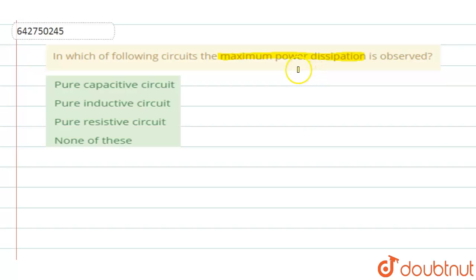How do you define power dissipation? Power dissipation is defined as the rate of energy, the rate at which energy is lost due to the circuit elements present in the circuit.